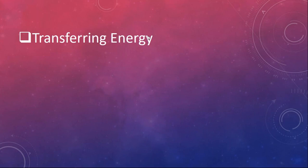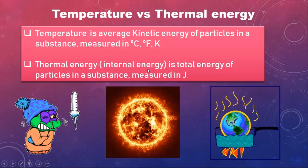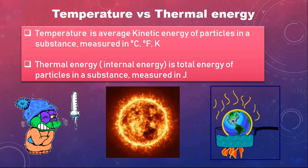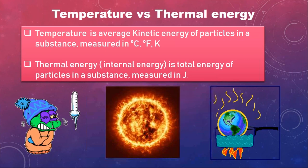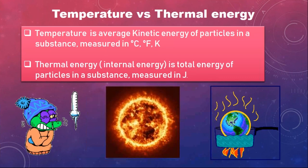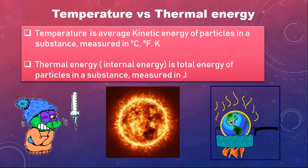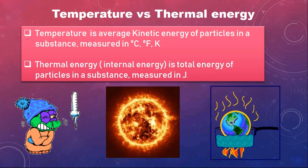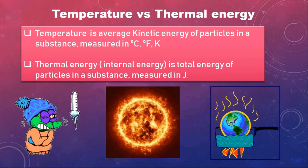Let's take a quick review of our last topic. In the last lesson we learned the differences between temperature, thermal energy, and heat energy. Temperature is the average kinetic energy of the particles in a substance. The units for temperature are Celsius degrees, Fahrenheit degrees, and Kelvin.